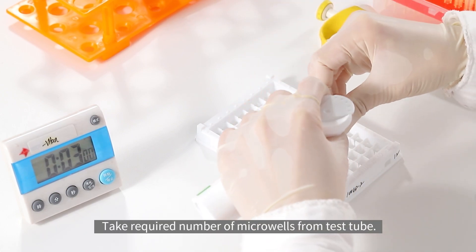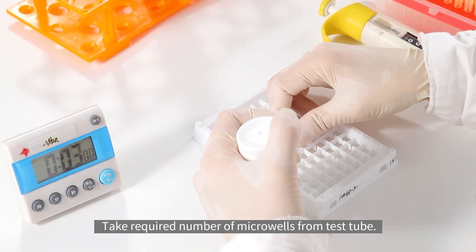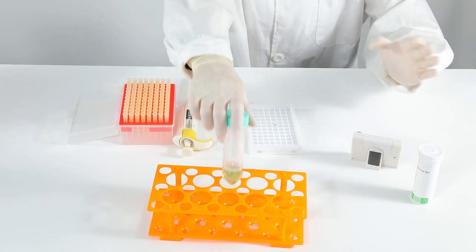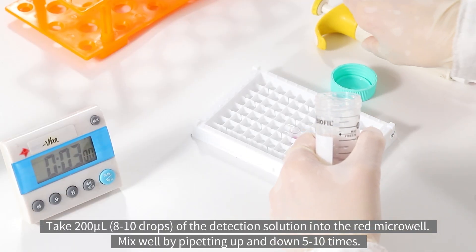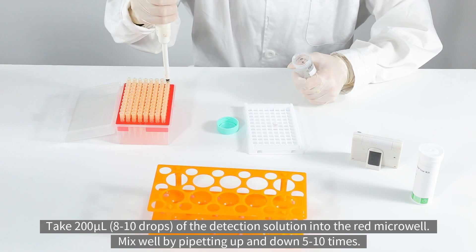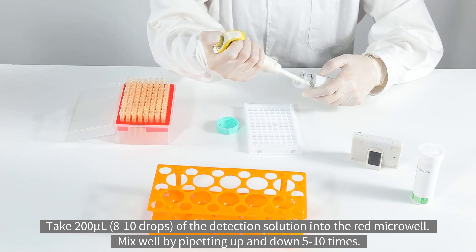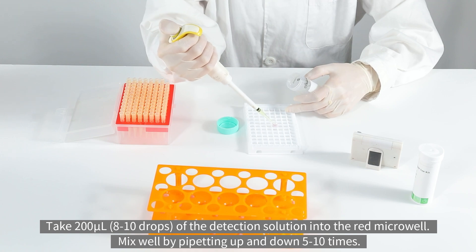Take required number of microwells from test tube. Take 200μL of the detection solution into the red microwell. Mix well by pipetting up and down 5-10 times.